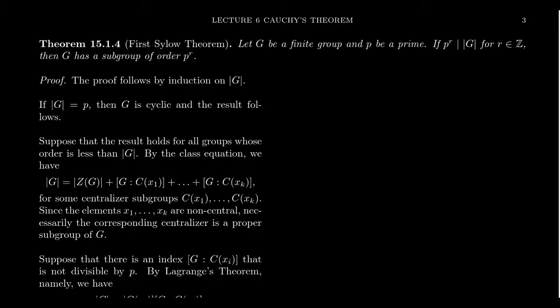The proof of the first Sylow theorem is actually almost identical to the proof of Cauchy's theorem we just saw. There is one critical difference that we will see, and at that moment we actually will need to use Cauchy's theorem, which is why we couldn't just do it all at once. We had to do Cauchy's theorem first, then the first Sylow theorem.